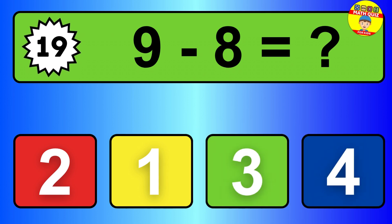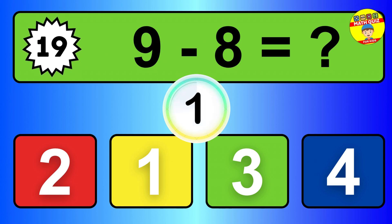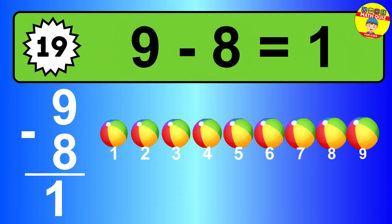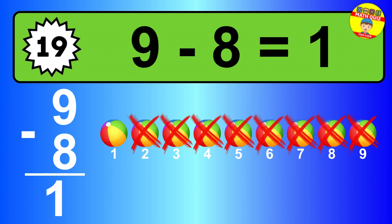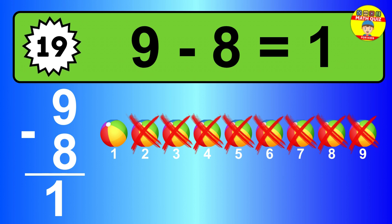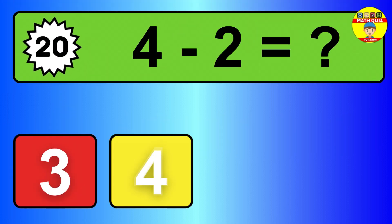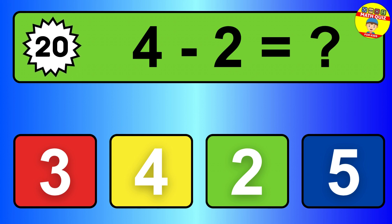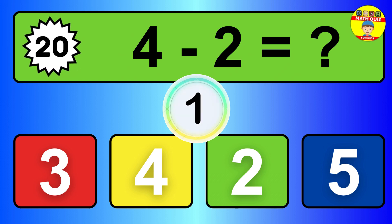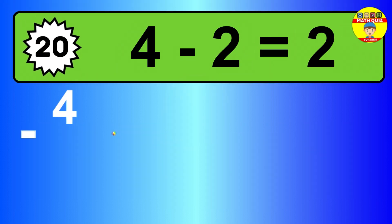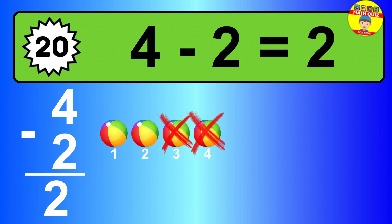Question nineteen. Nine minus eight equals what? So the answer is nine minus eight is one. Let's count it. One. Question twenty. Four minus two equals what? So the answer is four minus two is two. Let's count it. One, two.